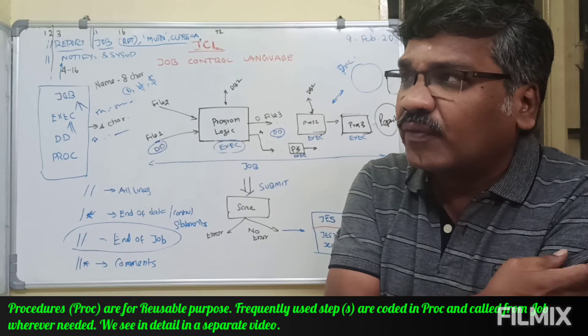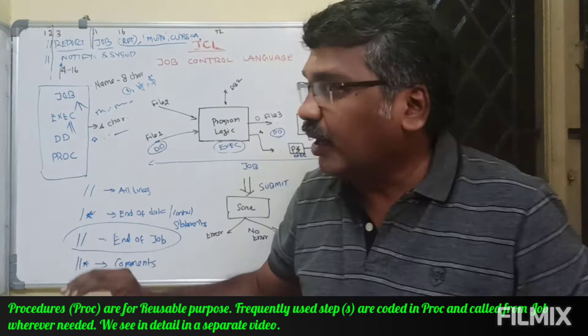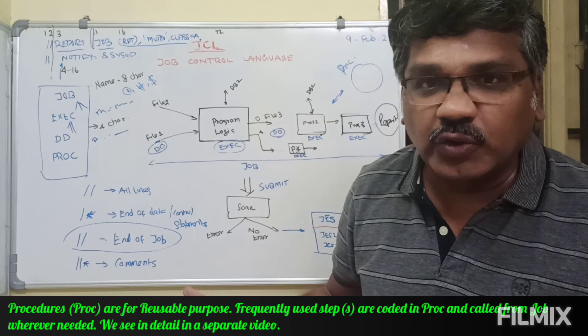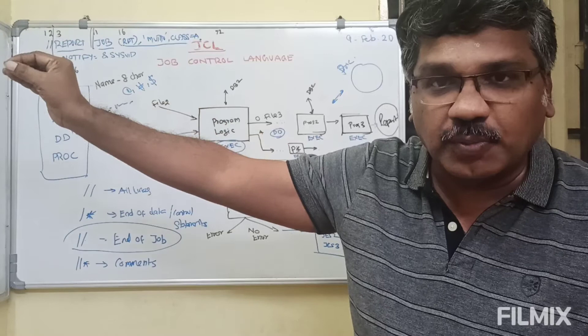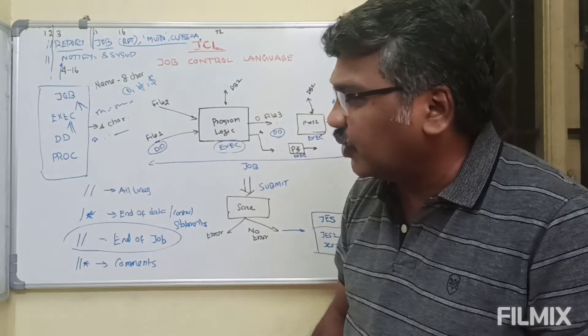The same concept applies to procedures: if you want a set of programs to be executed together in multiple jobs, you separate them from the job stream as a procedure and invoke it. Later, when a change is needed, you don't need to change all the jobs. Since it is externalized, making the change in the procedure alone is good enough — it will reduce a lot of work. That is what a procedure is, and we will see in-stream procedures and all those things in videos down the line.